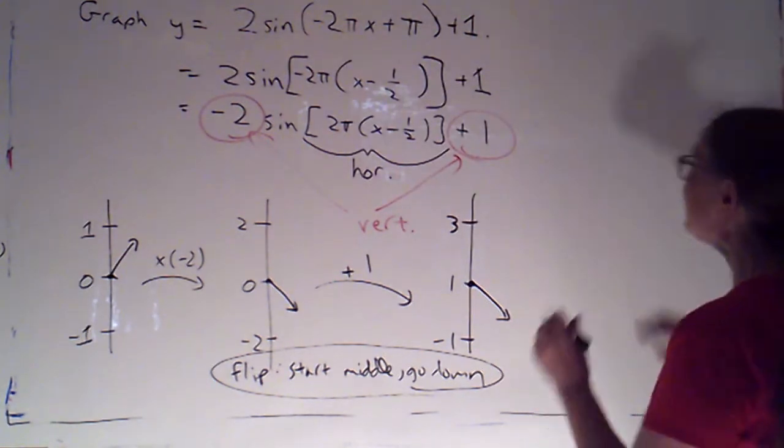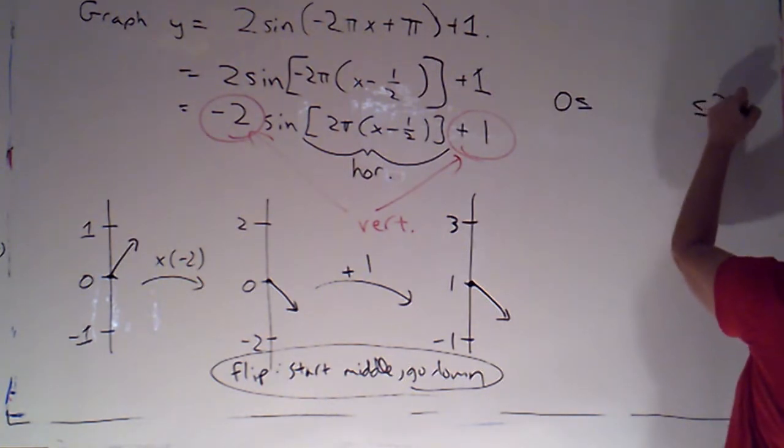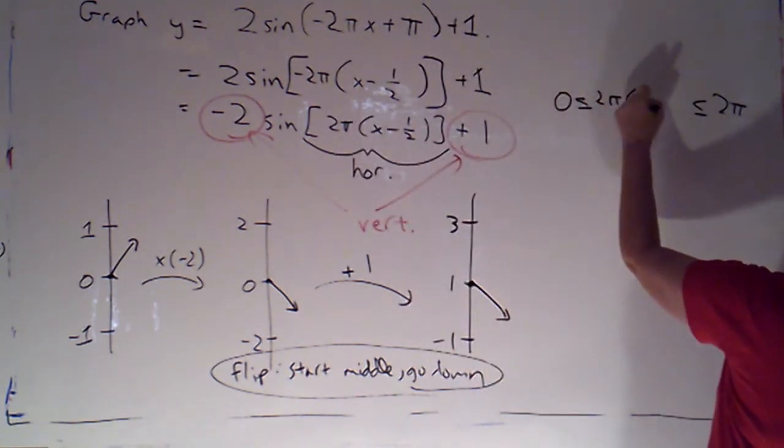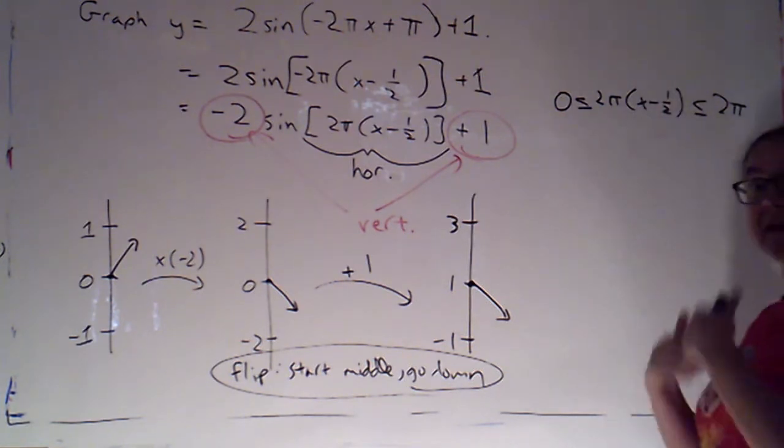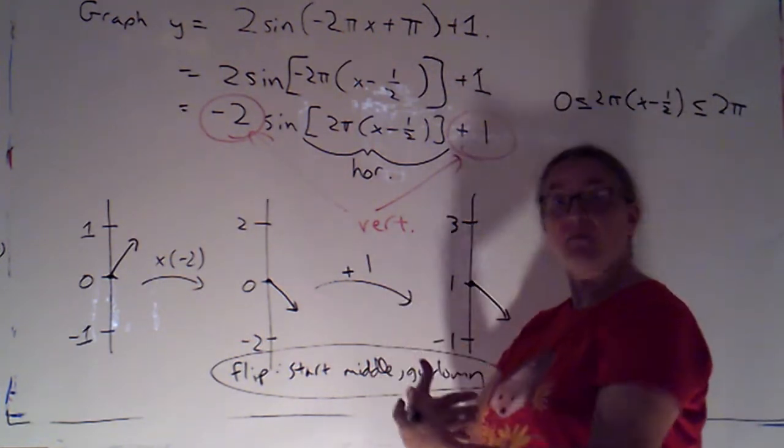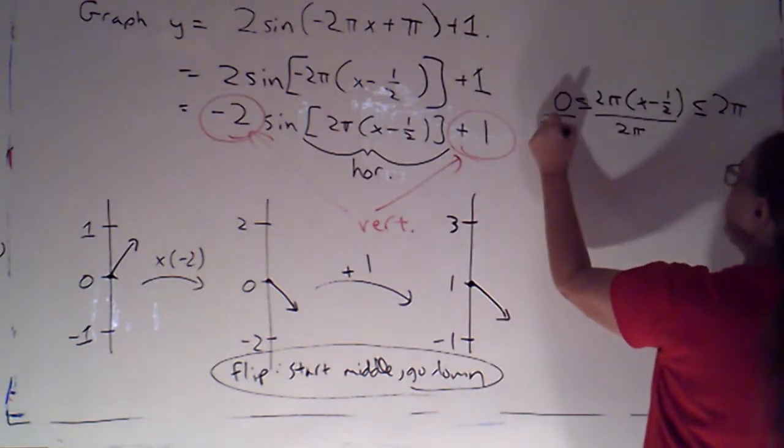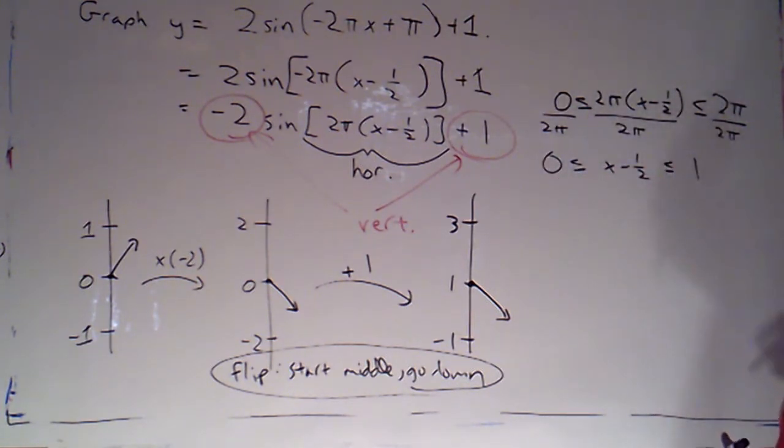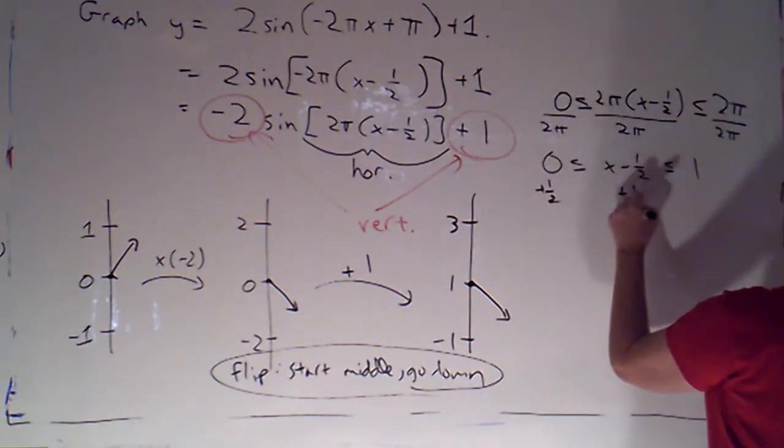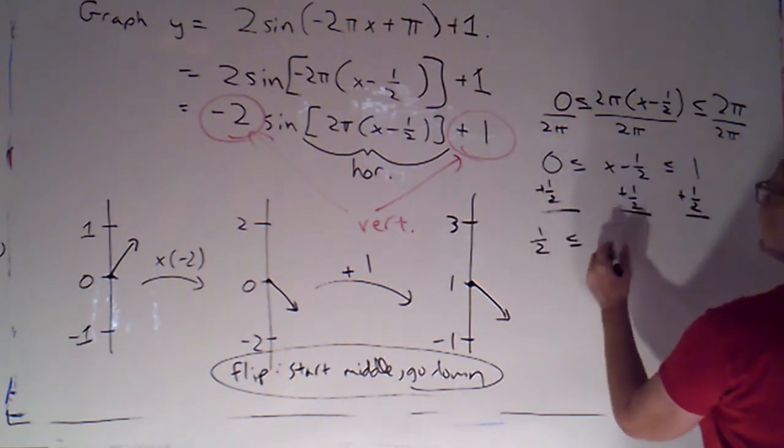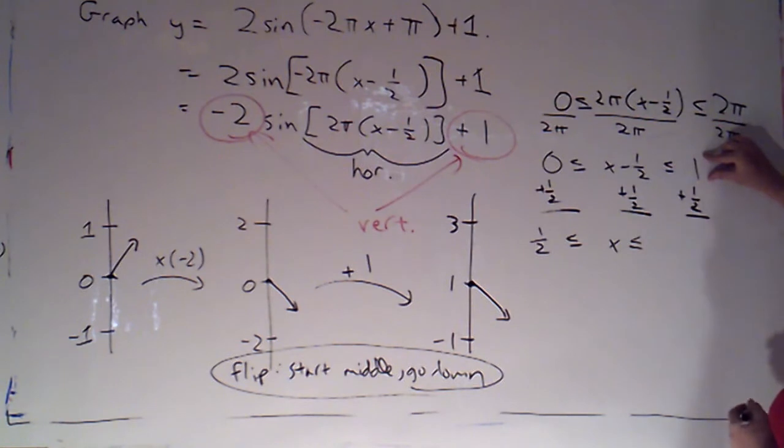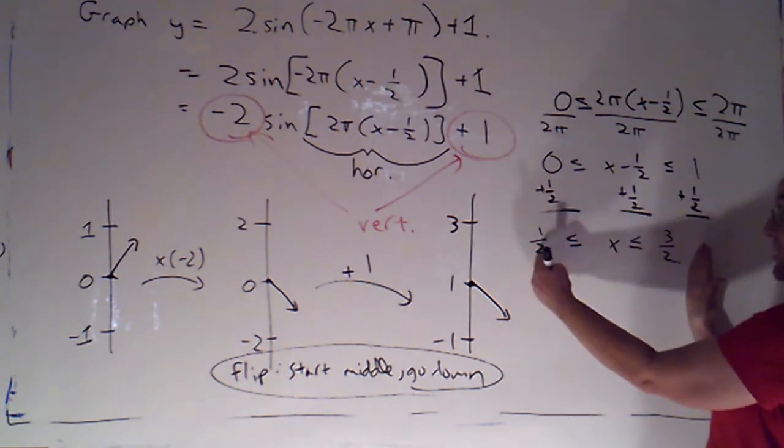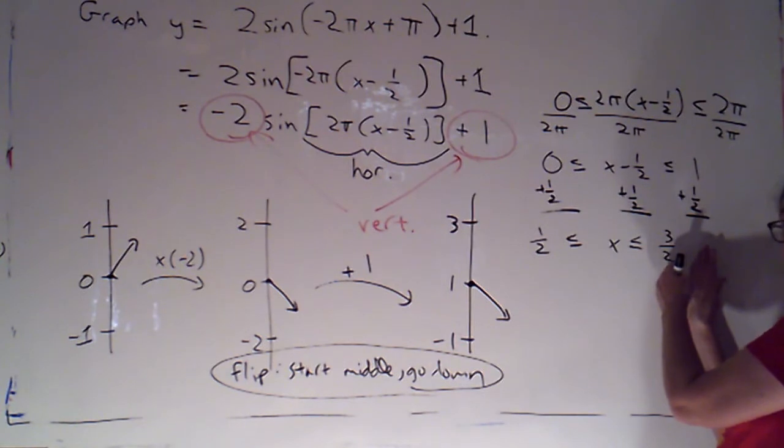Let's deal with the x values. So I know that sine does its thing once as the input varies from 0 to 2π. My input now is 2π times (x - 1/2). I'm going to solve for x to get a new starting and ending point for the period that I'm going to graph. So we'll divide through by 2π. So 0 ≤ x - 1/2 ≤ 1. Add the 1/2. So 1/2 ≤ x ≤ 3/2. So the graph that we draw is going to start at an x value of 1/2 and end at an x value of 3/2.